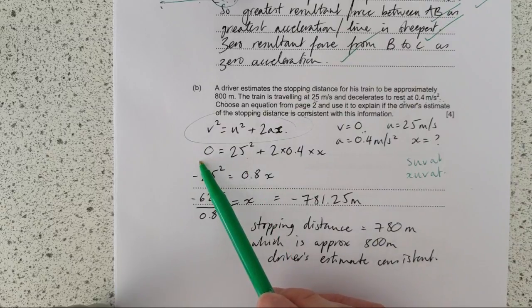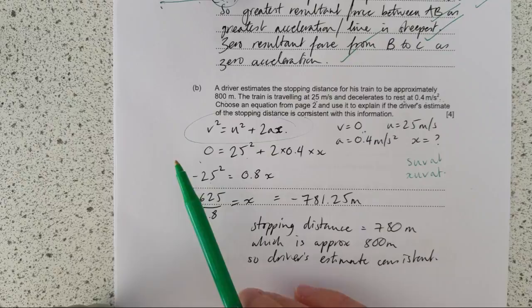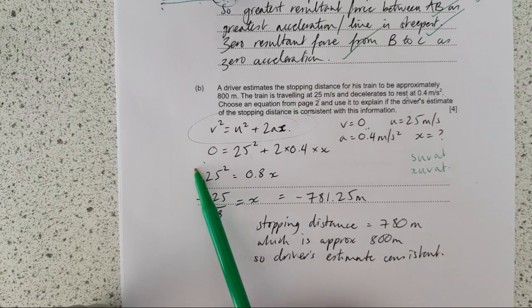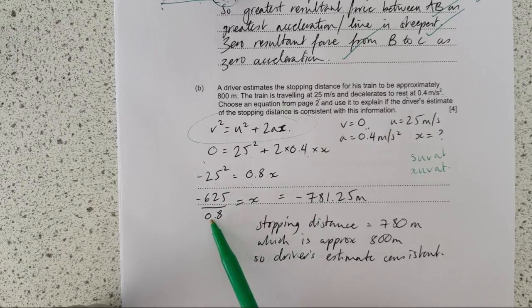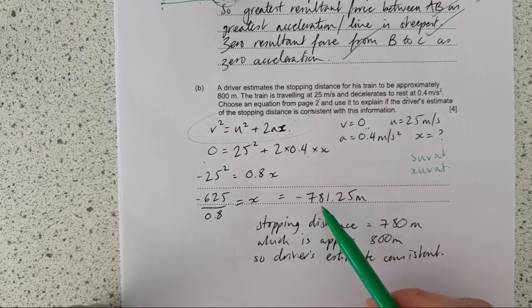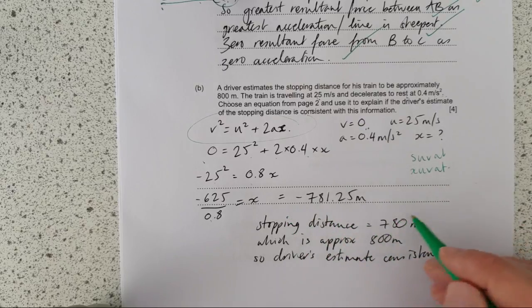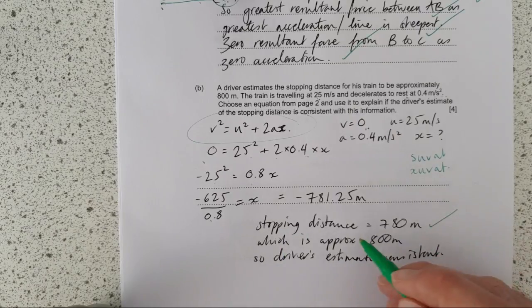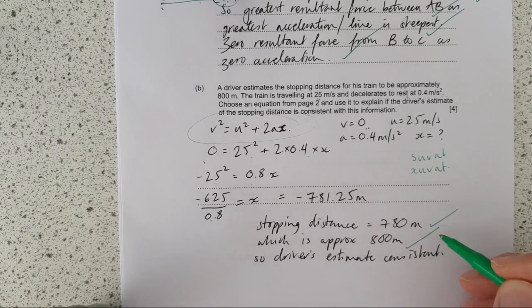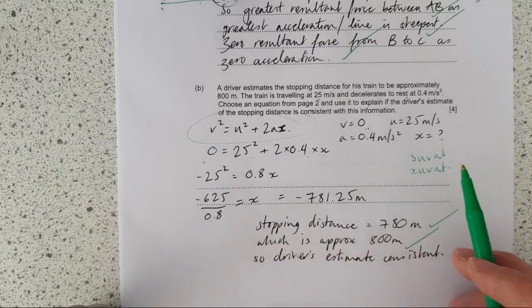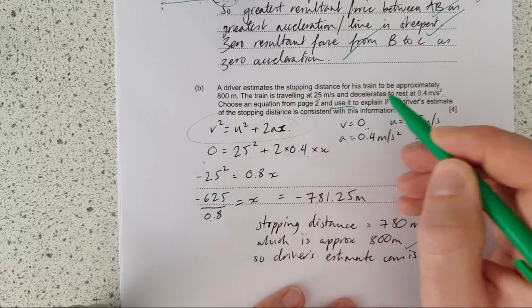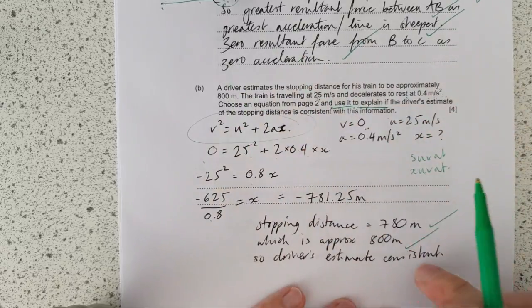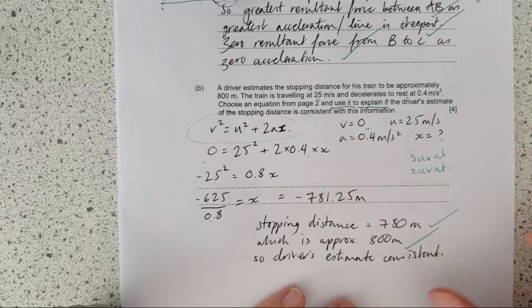So now you put the numbers in, simplify. So now I've straight away moved this over here by taking it away, so minus 25 squared. Remember, it's not minus 25 squared, it's minus 25 squared. So that becomes minus 625, and this 2 times 0.4 is 0.8. 625 over 0.8 gives you minus 781 blah blah blah. And it's a distance, so eventually it doesn't matter, but basically the final marks are for stopping distance is this, and yeah, it's approximately 800. So again, they've indicated with a few lines for writing, you need to give a statement.